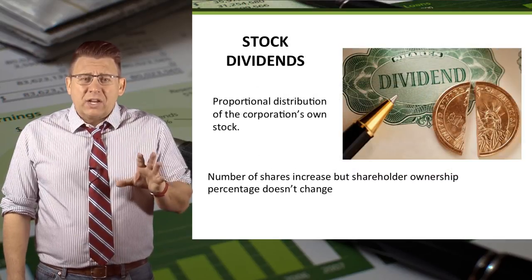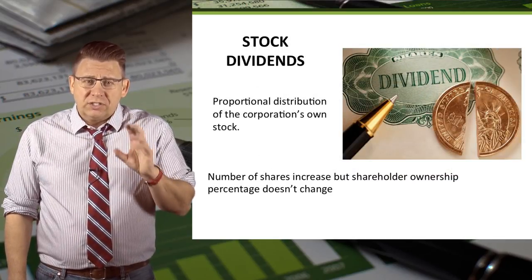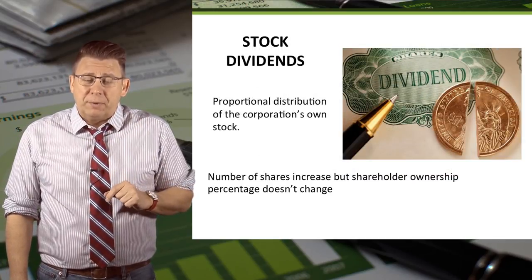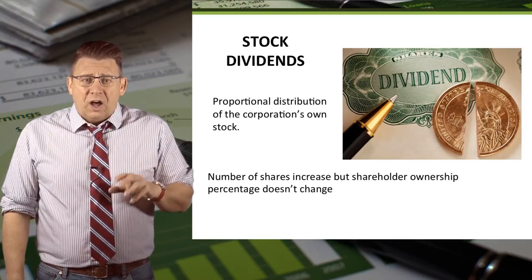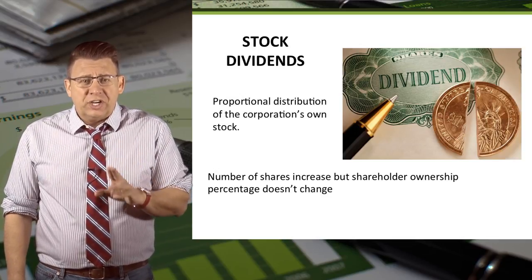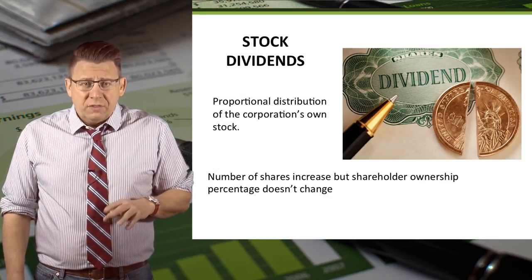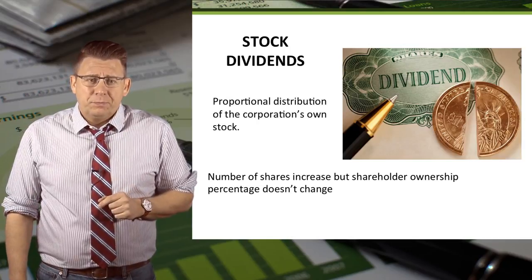A stock dividend is a proportional distribution of a company's own stock. Although stockholders receive more shares, their ownership percentage remains the same.